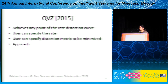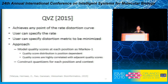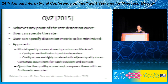Without going into the details in the interest of time, the main idea is as follows. We model the quality scores at each position as a Markov chain of order one, based on analyzing the statistics of the quality scores. Then, based on these statistics computed empirically from the data, we create quantizers, use these quantizers to quantize the quality scores, and finally compress them with an arithmetic encoder.